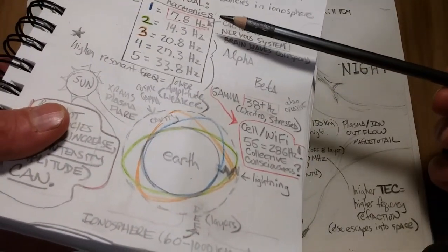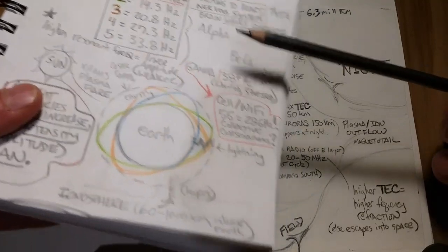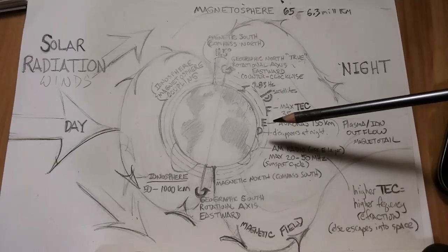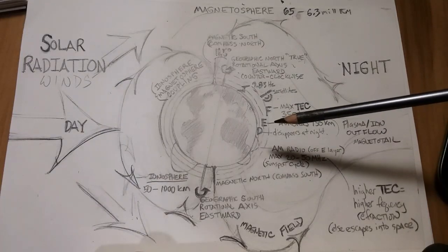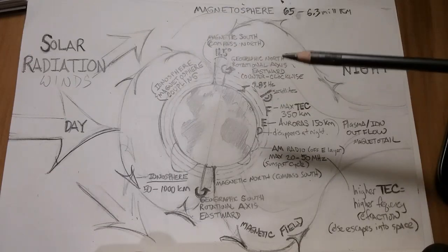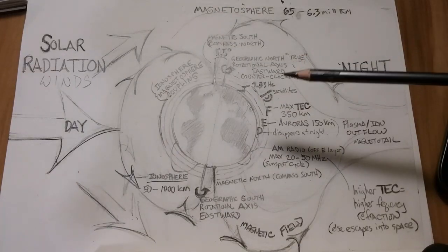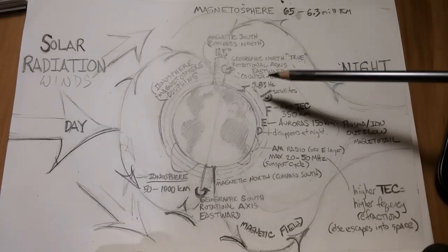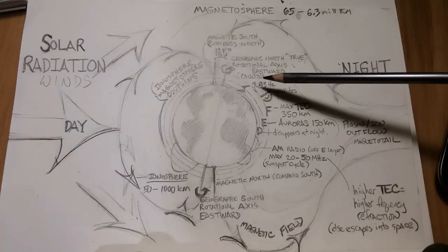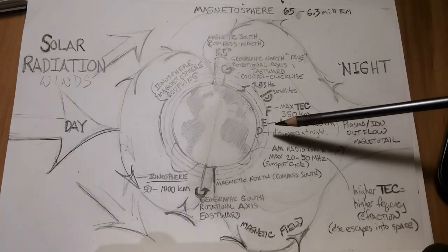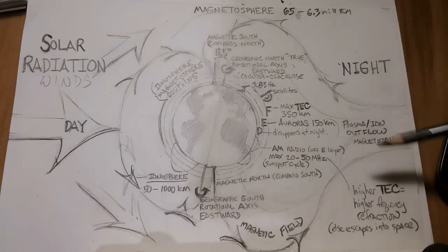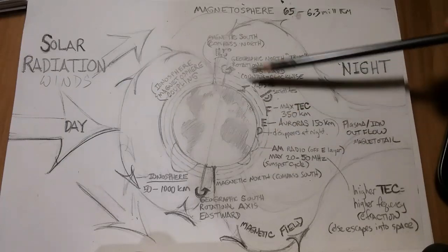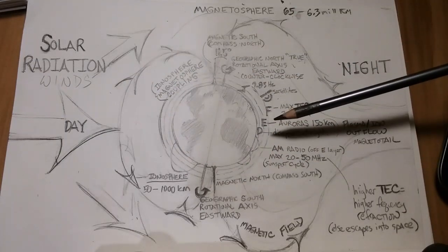lower than Schumann's hypothesized 10.6 hertz because radio waves traveling through the ionosphere are not traveling at free space velocity or the speed of light, or roughly 300,000 kilometers per second. Rather, the ionosphere slows down or delays radio waves in the ionosphere due to the total electron count or free electrons in the different layers of the ionosphere.